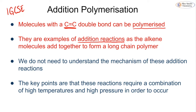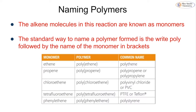Unlike other reactions of alkenes, we do not need to know the mechanism of this reaction. All we really need to know is that it requires a combination of high temperature and high pressure in order to occur. We have these conditions in order to break the pi bond and allow the polymerization to actually happen.